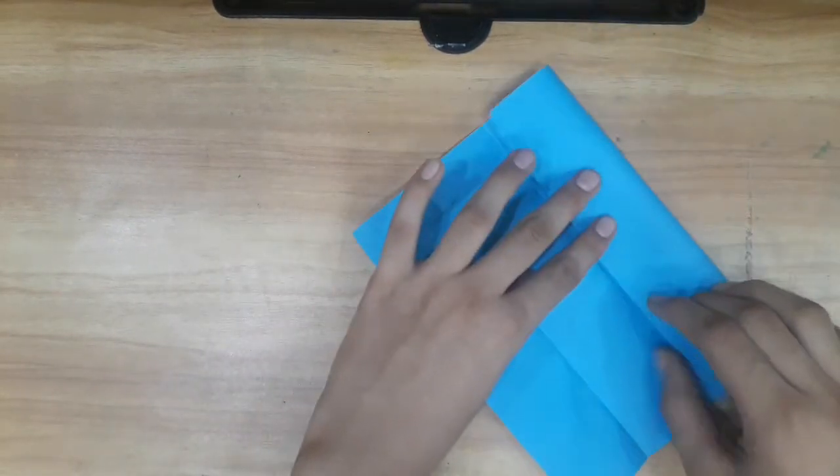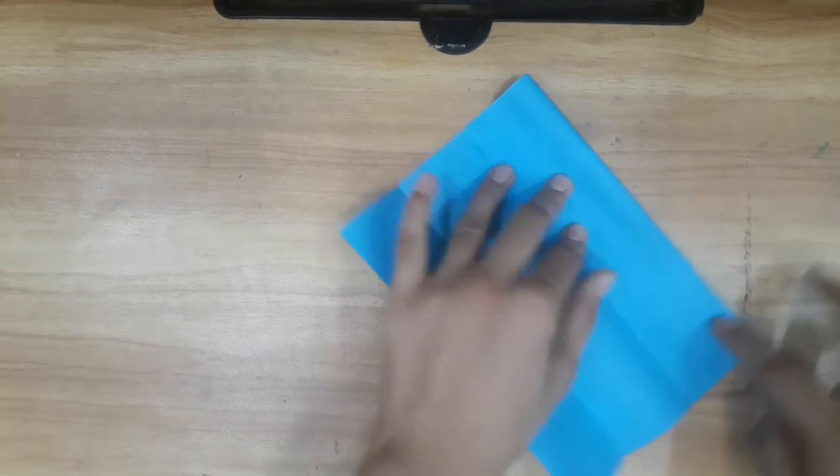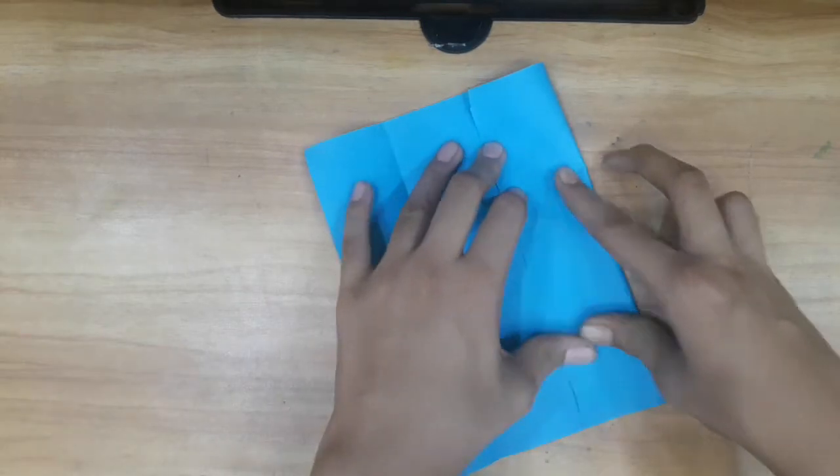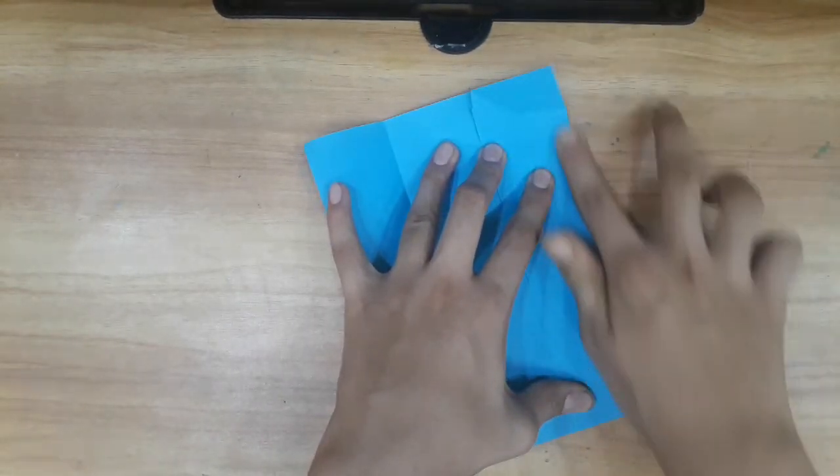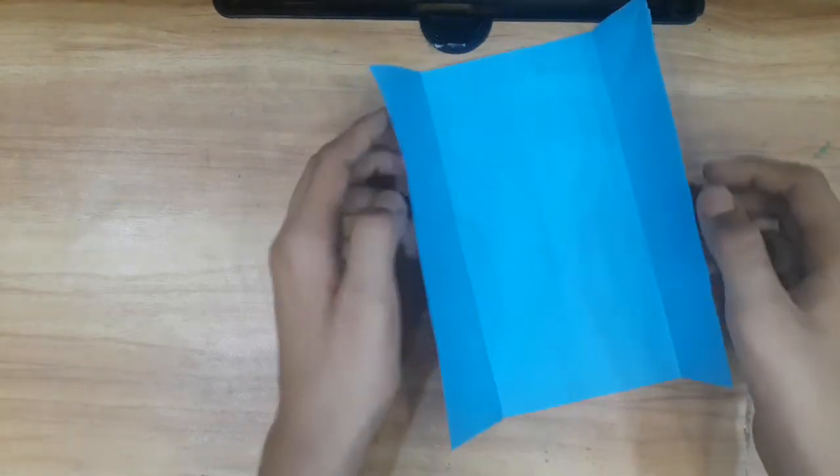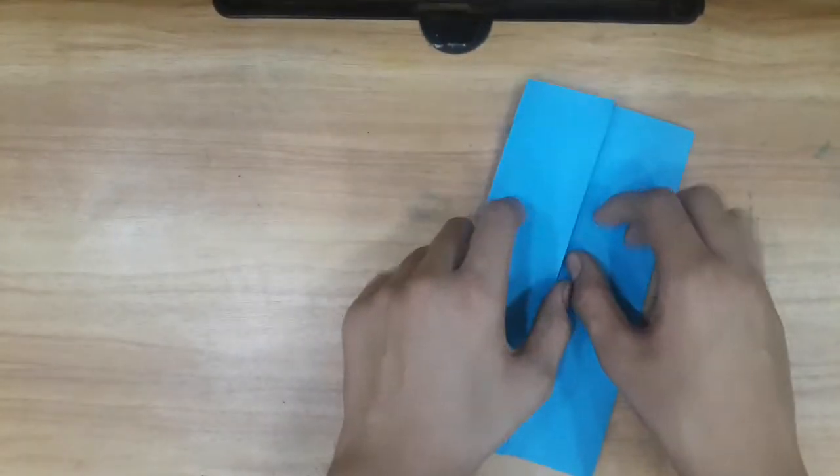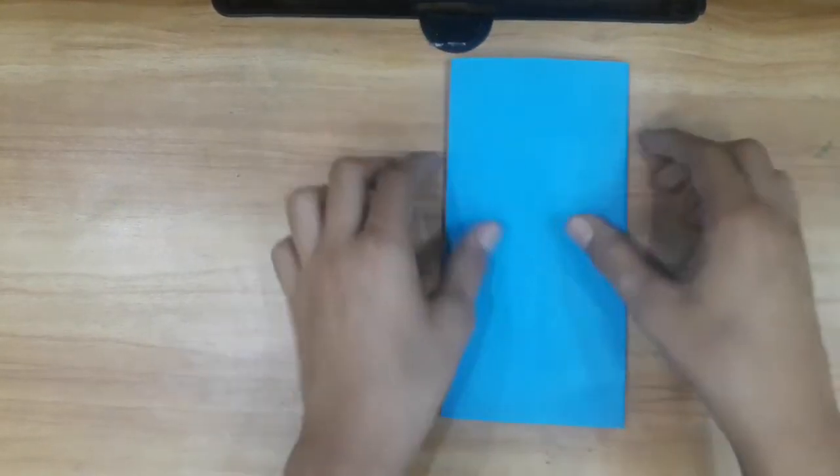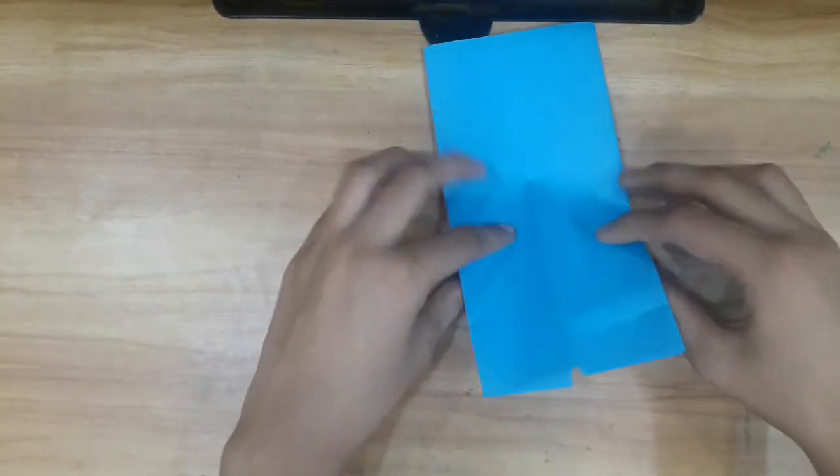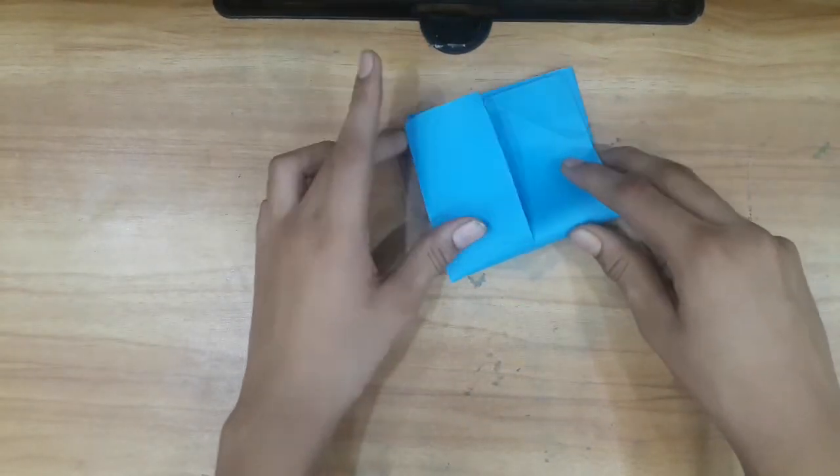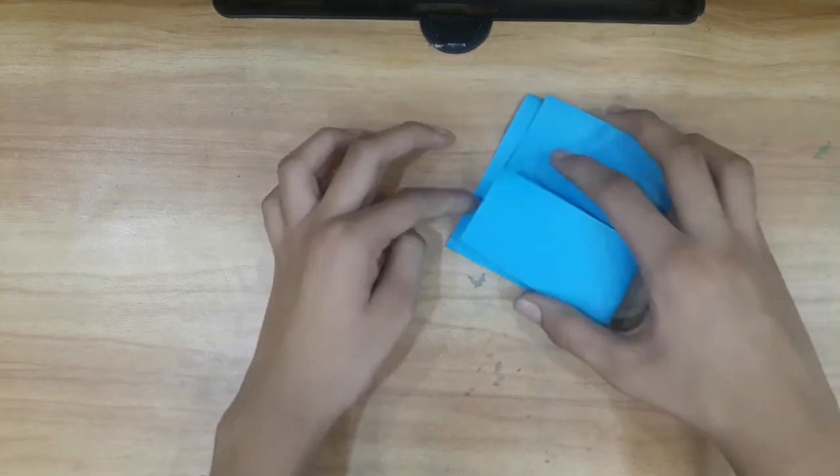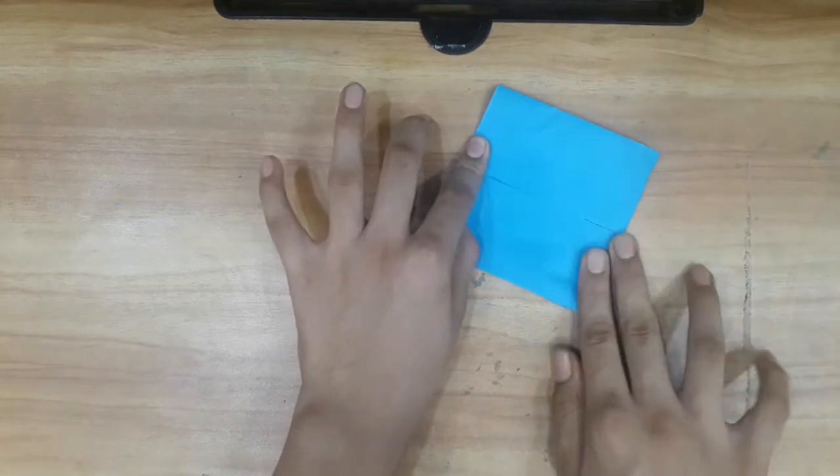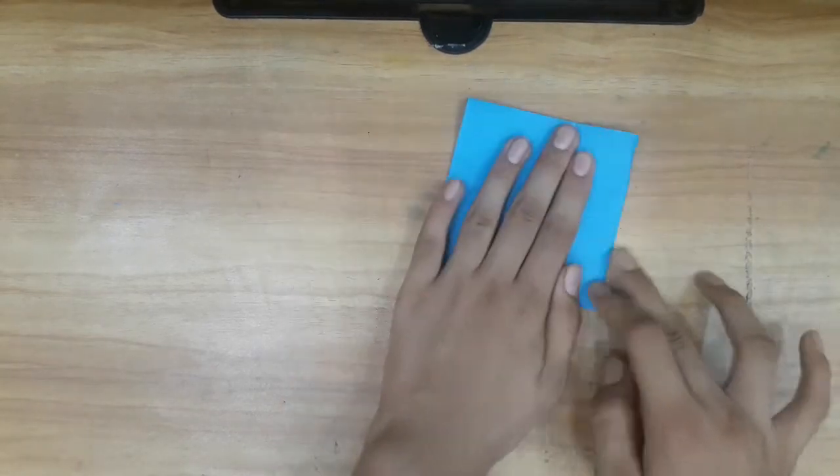Now this side. Now you can see that it is like a door. Now we have to flip it like this and then make half once again like this.